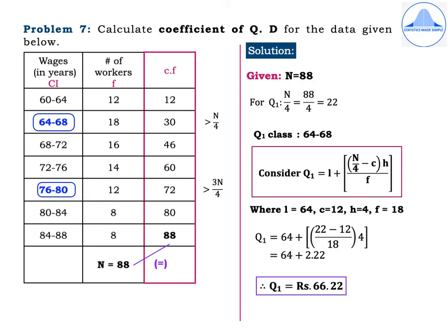Problem 7. Calculate the coefficient of quartile deviation for the data given below. Wages in rupees: 60–64, 64–68, 68–72, 72–76, 76–80, 80–84, 84–88. Number of workers: 12, 18, 16, 14, 12, 8, 8. Mark class intervals and frequencies, then find N = sum of frequencies = 88.